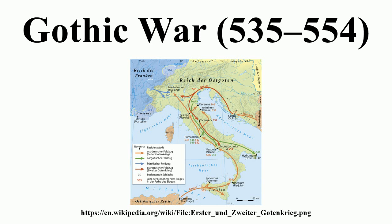Constantinus accomplished his task speedily. The Gothic general Gripar abandoned Salona, which he had only recently occupied, because of the ruined state of its fortifications and the pro-Roman stance of its citizens, and withdrew to the north. Constantinus then occupied the city and rebuilt its walls. Seven days later the Gothic army departed for Italy, so that by late June Dalmatia was again in Roman hands.